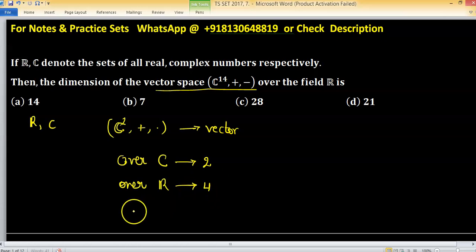How is it 4? If you have a complex number a plus bi and c plus di, this ordered pair belongs to C^2.